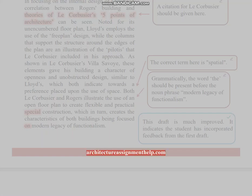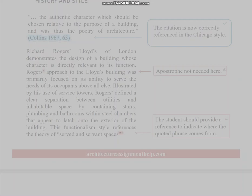Architecture Assignment Help: History and Style. The authentic character which should be chosen relative to the purpose of a building, and was thus the poetry of architecture. Collins, 1967, 63. The citation is now correctly referenced in the Chicago style. Richard Rogers' Lloyd's of London demonstrates the design of a building whose...